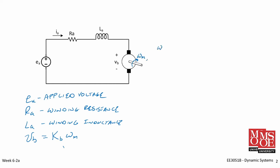Recall that omega M is equal to the derivative of the angular displacement of the shaft as a function of time. And finally, the torque the motor derives — T sub M — is equal to K sub T times the winding current or the current through the windings. And that came from Lenz's law of force.